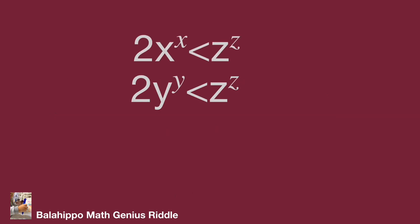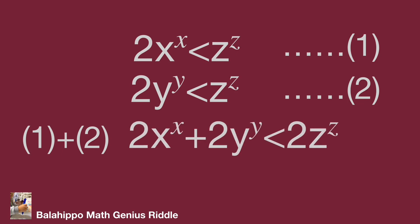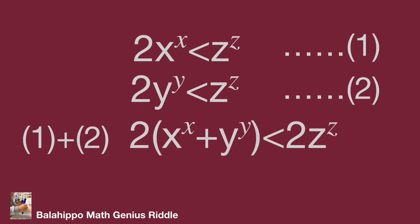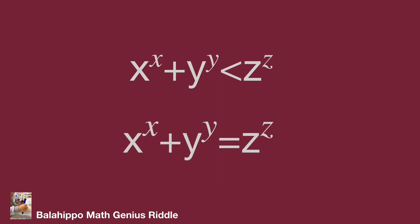Let's list these two new results: Item 1: 2·x^x < z^z, and Item 2: 2·y^y < z^z. Adding Item 1 and Item 2 gives 2·x^x + 2·y^y < 2·z^z. Dividing both sides by 2 gives x^x + y^y < z^z. This conflicts with the given information x^x + y^y = z^z. So we prove that there is no positive integer solution to x^x + y^y = z^z.